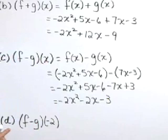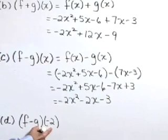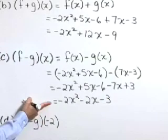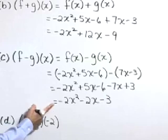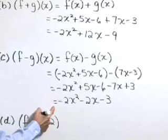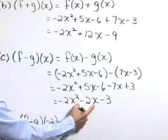Lastly, in part D, we wish to find f minus g of negative 2. So I'm going to use the result from part C where we found f minus g of x and substitute negative 2 in for x in that function.